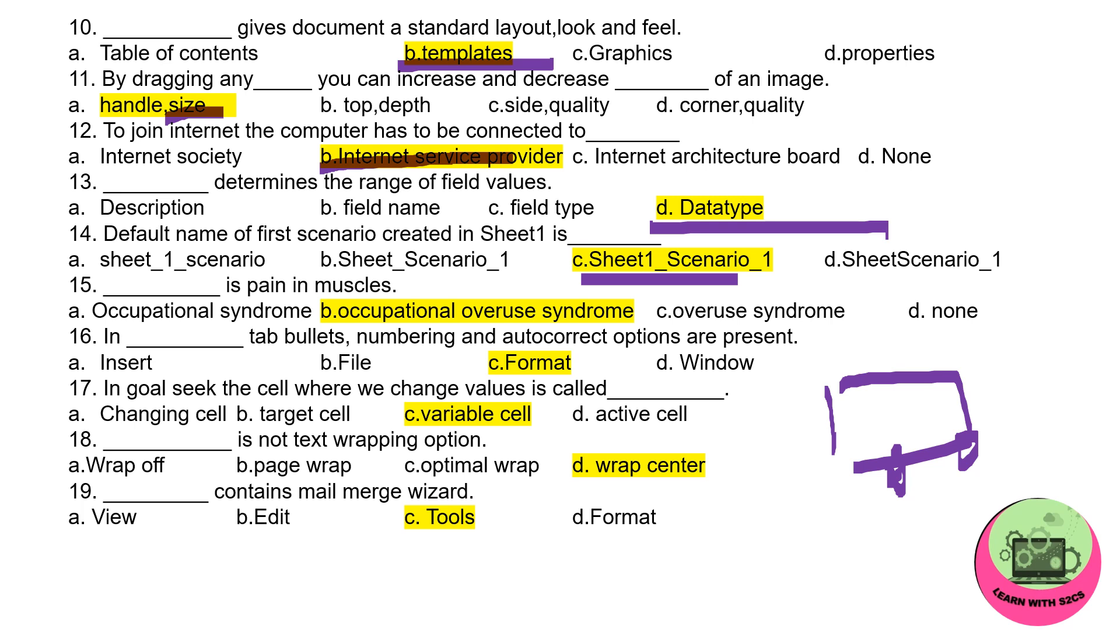Next: dash is pain in muscles, that is Occupational Overuse Syndrome. 16th one: in dash tab, bullets, numbering and autocorrect options are present. Format. In format option or in format tab you can find this.